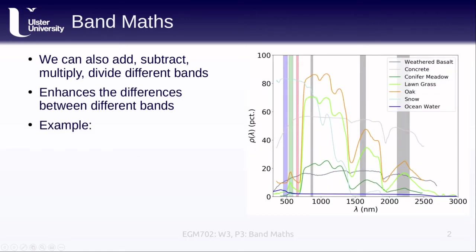If we look at our plot of spectral reflectance as a function of wavelength for different surfaces, you can see the wavelength range for visible blue, visible green, visible red, near-infrared, shortwave infrared, and shortwave infrared 2. These correspond to the different Landsat bands.